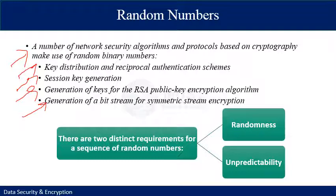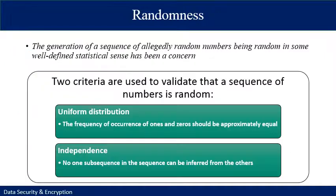This wide variety of applications gives rise to two distinct requirements for a sequence of random numbers: randomness and unpredictability. Two criteria are used to validate that a sequence of numbers is random. The first is uniform distribution, which states that the frequency of occurrence of ones and zeros should be approximately equal — the distribution of bits in the sequence should be uniform.